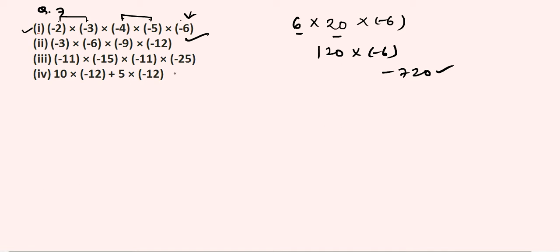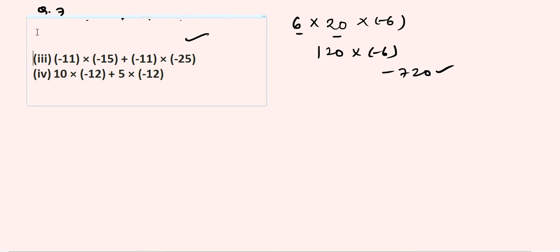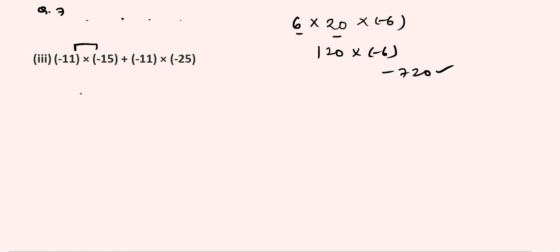The second question is the same — you can solve it. In the third question, there is a plus sign but I think by mistake it is written as multiplication. I am solving the third question here. Minus 11 into minus 15: 11 into 15 gives 165, so minus 11 into minus 15 is positive 165. Again, minus into minus gives plus, and 11 into 25 gives 275. Adding 165 and 275 gives 440 — the required answer.